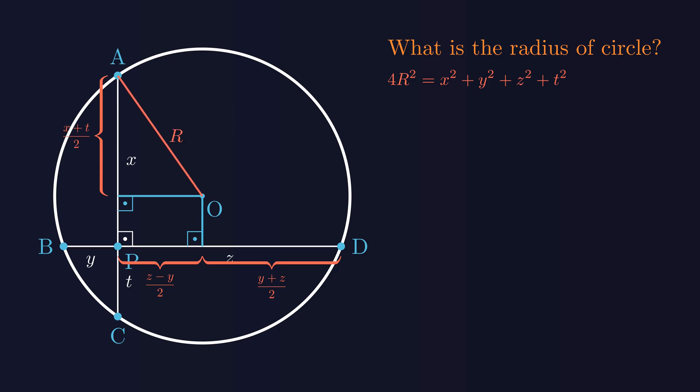If we connect point A to the center O, that gives us a radius. And now, notice we've formed a right triangle. The square of x plus t over 2 plus the square of z minus y over 2 equals r squared. If you expand this, you get an equation that looks pretty complicated at first glance.